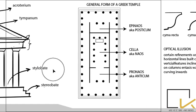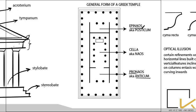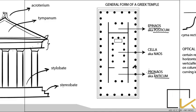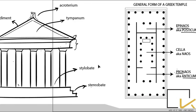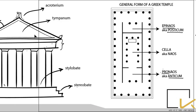For temple planning: the naos is the main cell where the deity is placed. The cell before the naos is the pronaos, also known as the anticum. The cell after the naos is the opisthodomos, also known as the posticum. So entering the temple, you go through the anticum, then the central naos, and then the posticum at the back. Temples are also differentiated into 11 types depending on the columns at the front.